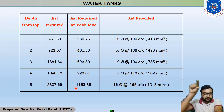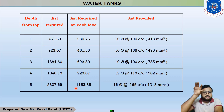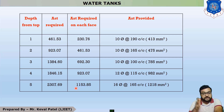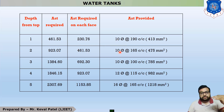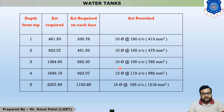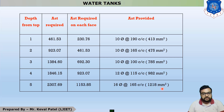At the first meter depth, pressure is low, so we provide 10 mm diameter bars. After finding the diameter, we calculate spacing and spacing provided, then find the AST provided. As we go deeper, the pressure increases, so the bar diameter increases. At the maximum depth of 5 meters, we provide 16 mm diameter bars at 165 mm center-to-center. The AST provided at 5 meter depth is 1218 mm².